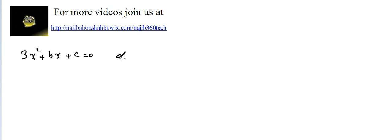...has two roots: alpha equals 1 plus radical 2 divided by 3, and beta equals 1 minus radical 2 divided by 3. Since we have the roots, we can find the sum and the product.